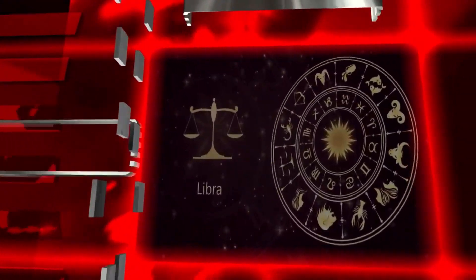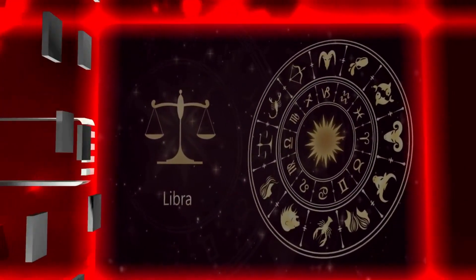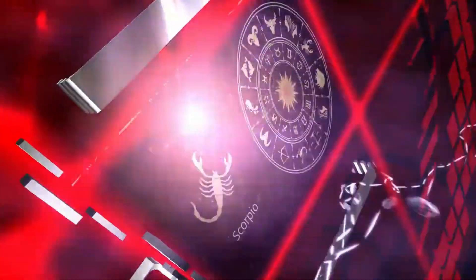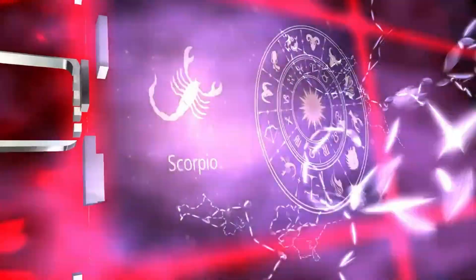Libra: The Moon in Cancer can find you focused on your career today, and as it connects with wildcard Uranus in Taurus, you could be surprised by the attention your work is getting. Surprises concerning money or resources may pop up. Scorpio: The Moon in fellow water sign Cancer connects with Uranus in your opposite sign Taurus, which can find you running into someone unexpected.